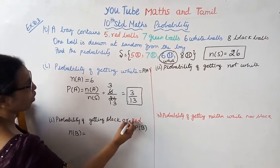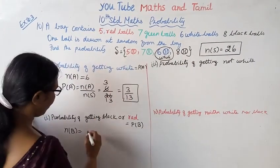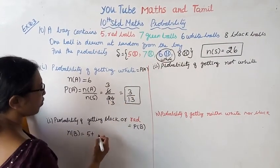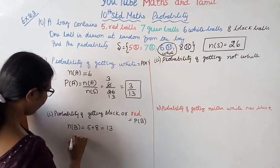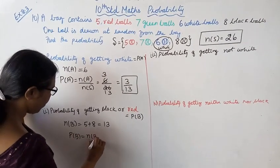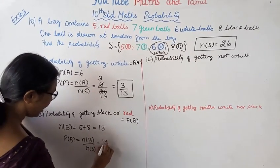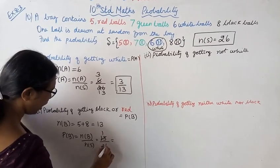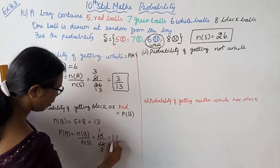Second, black or red. Black is 8, red is 5. 5 plus 8 equals 13. P(B) equals n(B) by n(S). n(B) is 13, n(S) is 26. 13 ones are 13, 13 twos are 26, which simplifies to 1 by 2.